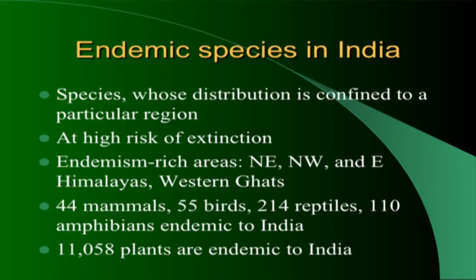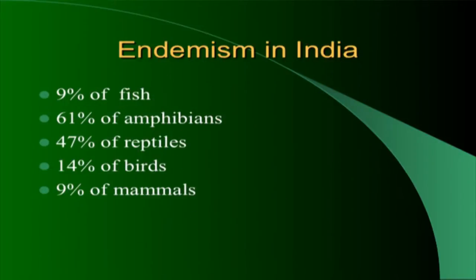India has 11,000 endemic plants, 55 endemic birds, and 14 endemic reptiles. Those 55 birds are found only in India. Of total reptiles found in India, 47 percent are endemic — found only in India.